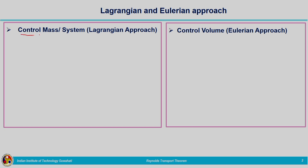One thing is control mass or system and the second is the control volume. If we are talking about fluid flow, we can analyze it by making use of the Lagrangian approach and the Eulerian approach. Let us see in detail what is the difference between these two.